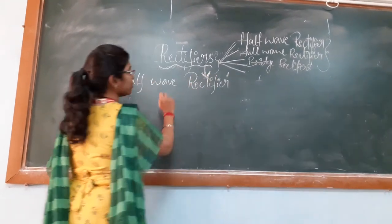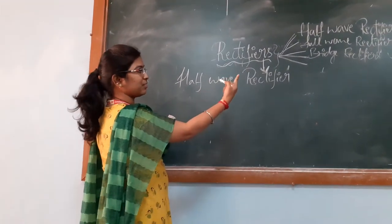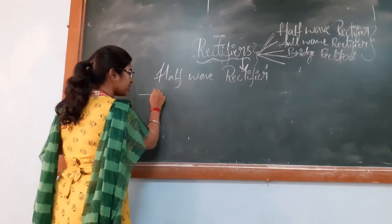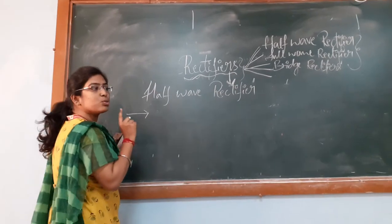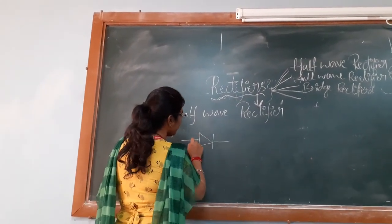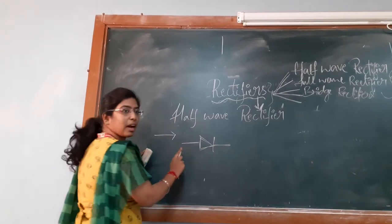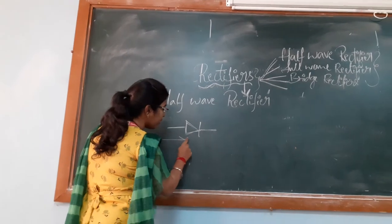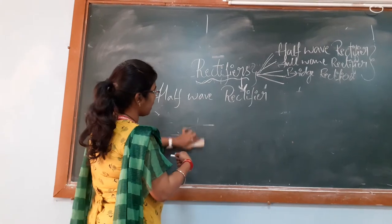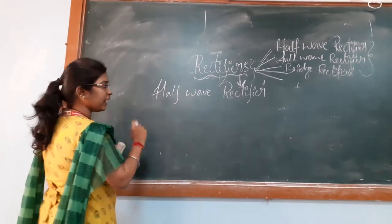Before going to the rectifier, in the rectifier we use a device called a diode. Just as discussed in the definition, the rectifier allows current in only one direction. For the current to flow in one direction, we use a device called a diode. This diode allows current to flow only in one direction — that is, in the forward direction or reverse direction. We are using the diode as a component in the rectifiers.